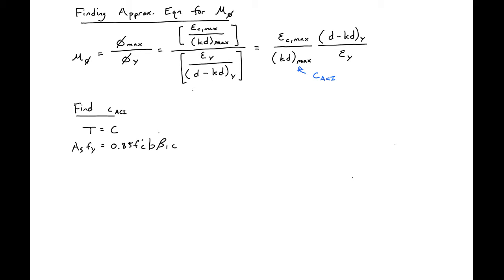Our tension is A_s*F_y, our compression is 0.85*F'_c times B times beta_1*c. Next, we can divide both sides by BD to give us things in terms of rho, so we'll have rho*F_y equals 0.85*F'_c*beta_1*c/D.